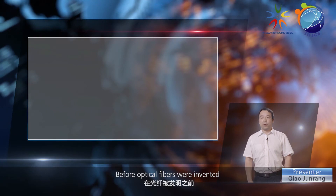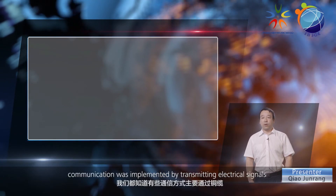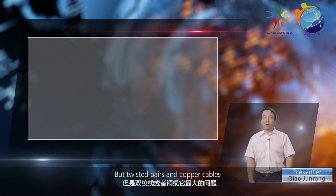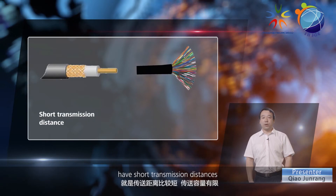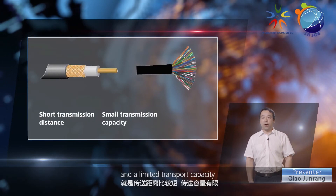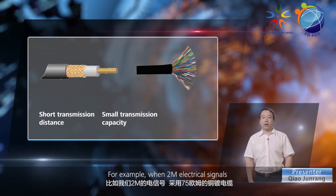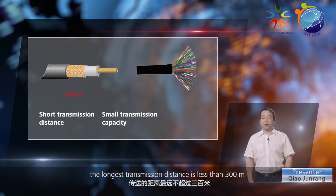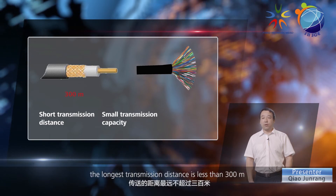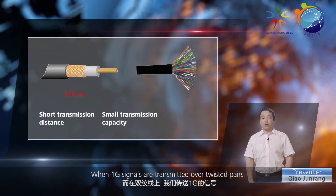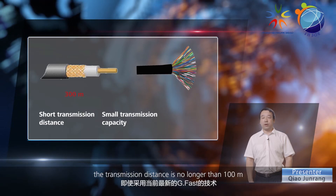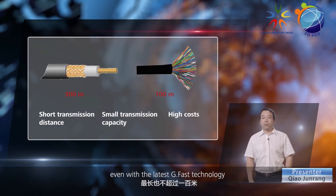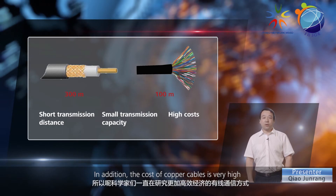Before optical fibers were invented, communication was implemented by transmitting electrical signals over copper cables or twisted pairs. But twisted pairs and copper cables have short transmission distances and a limited transport capacity. For example, when 2M electrical signals are transmitted using 75-ohm copper cables, the longest transmission distance is less than 300 meters. When 1G signals are transmitted over twisted pairs, the transmission distance is no longer than 100 meters, even with the latest G.Fast technology. In addition, the cost of copper cables is very high.